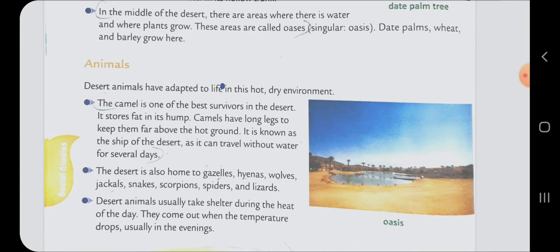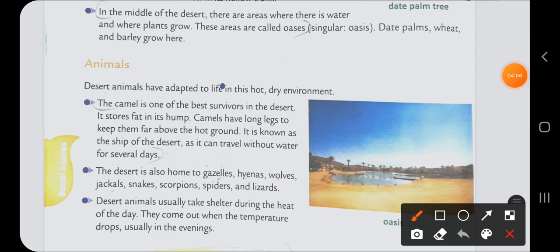Then fourth question: Name some animals that are found in the desert. Which are the animals? The answer is given in the same page, same paragraph. Desert is also home to: gazelles, hyenas, wolves, jackals, snakes, scorpions, spiders and lizards. That is the answer to question number 4. Any 4 animals you can choose.